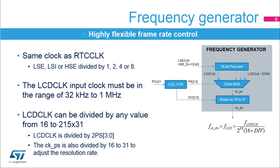The LCD controller features a highly flexible frequency generator. The LCD clock source is the same as the RTC clock, which is either a low-speed external 32.768 kHz oscillator (LSE), a low-speed internal 32 kHz RC oscillator (LSI), or a high-speed external 4 to 48 MHz oscillator (HSE) divided by 1, 2, 4, or 8. The frequency generator allows you to achieve various LCD frame rates starting from an LCD clock source which can vary from 32 kHz to 1 MHz. The clock source must be stable in order to obtain accurate LCD timing and hence minimize DC voltage offset across LCD segments. The input clock LCD CLK can be divided by any value from 16 to 2 to the 15th power times 31.